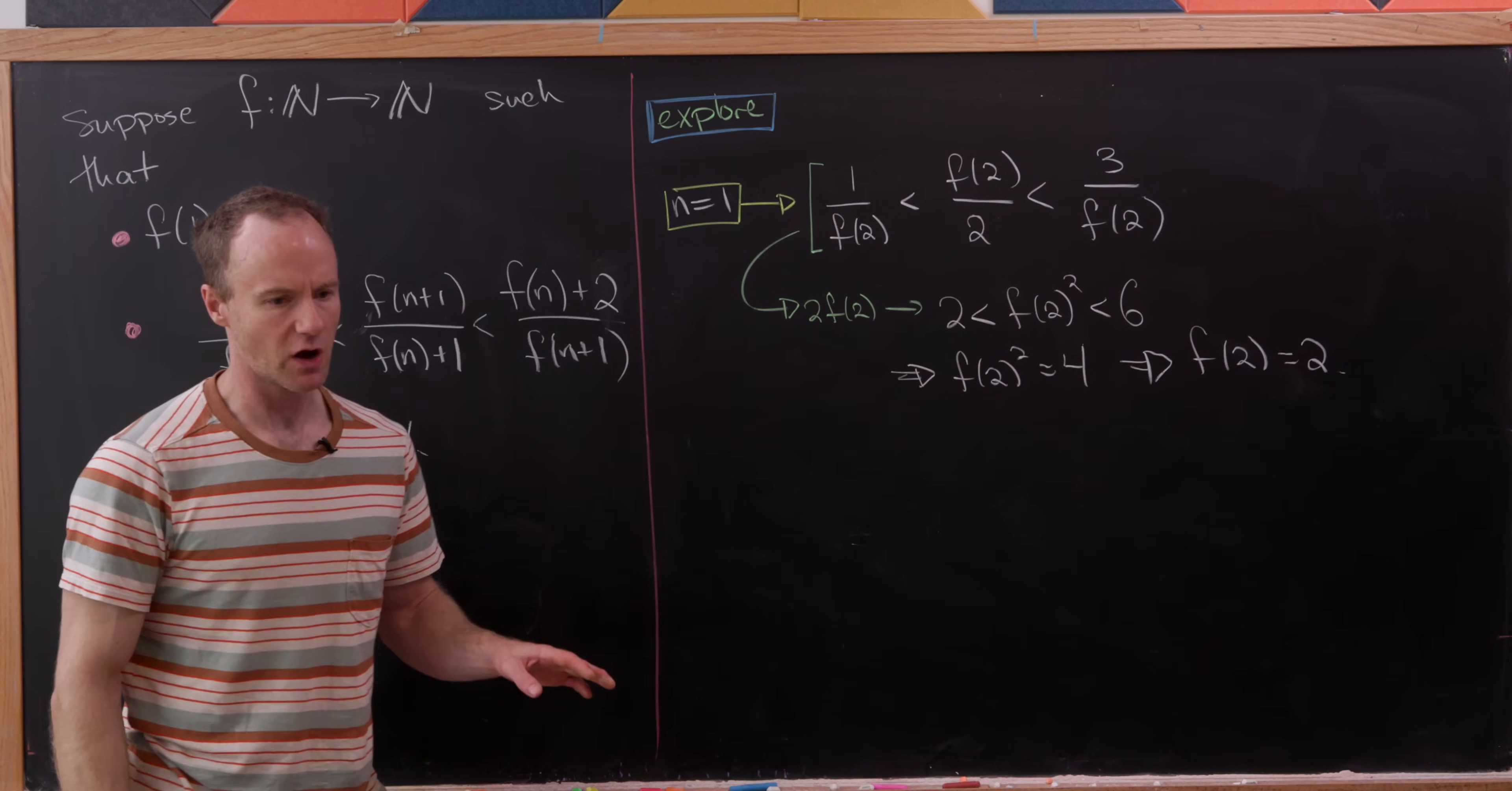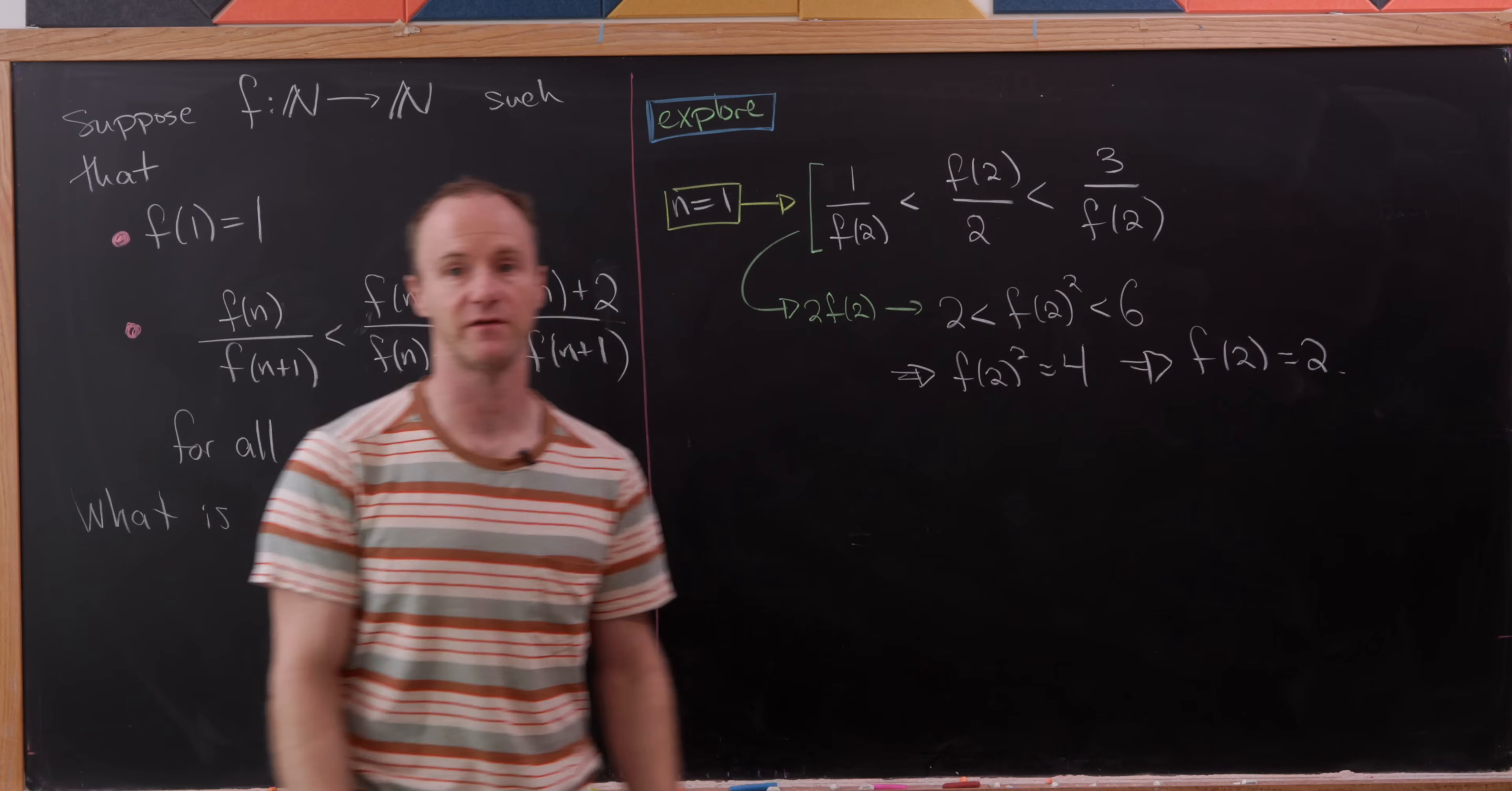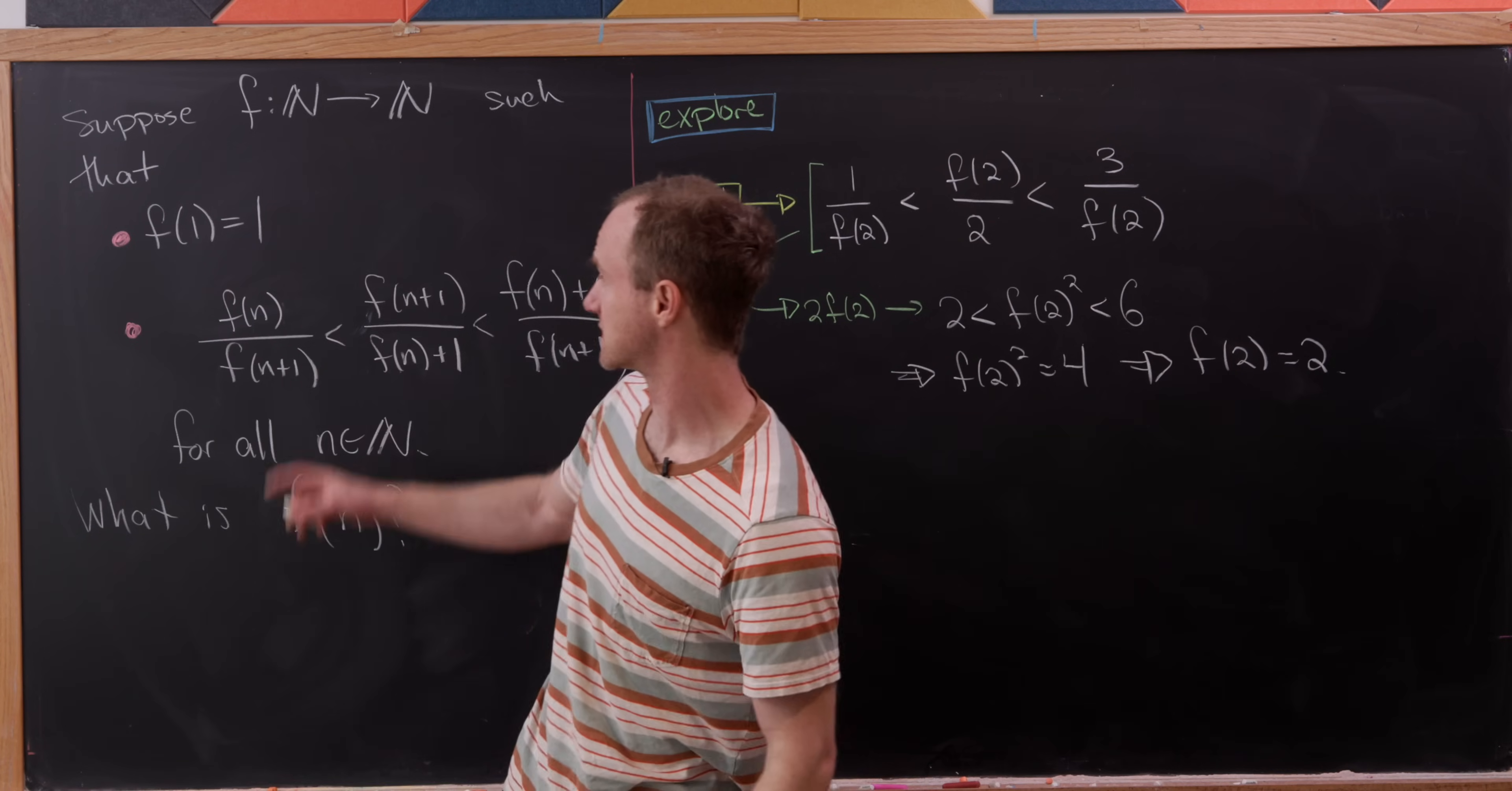Now if you've solved many functional equations, you know a lot of the times the solutions are f of x equals x, or in this case since we're using n as the variable, f of n equals n, and that looks like it's going to be the case here from our first two cases.